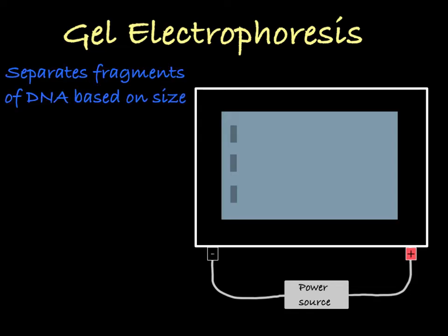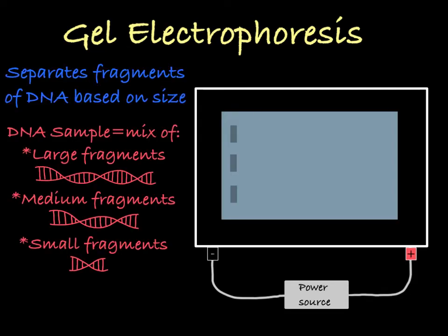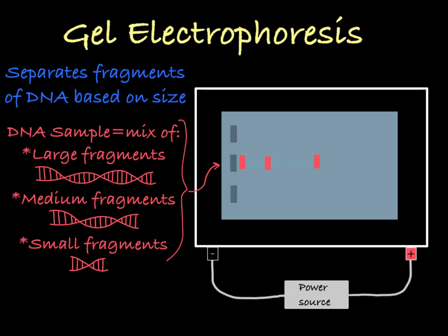Gel electrophoresis is a process that allows you to separate DNA molecules based on size. You place different sized fragments of DNA into a gel, and then apply a current to the buffer surrounding the gel. The DNA will travel through the gel but move at different speeds based on the different fragment sizes. Larger fragments of DNA will move much slower through the gel than smaller fragments.